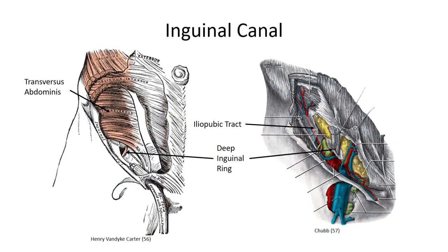Laterally, the fibers of the transversus abdominis arch over the spermatic cord or round ligament to form the deep inguinal ring, which is the lateral termination point of the inguinal canal. Deep to the conjoint tendon, the transversalis fascia projects inferiorly and blends into the inguinal ligament. In this region, it is typically referred to as the iliopubic tract. This fusion creates a functional boundary between the abdomen and lower limb, as abdominal contents are not able to project past this inguinal ligament.